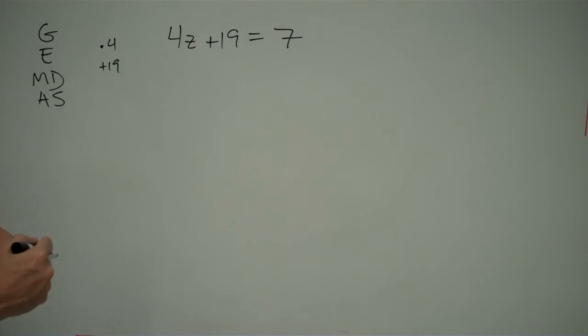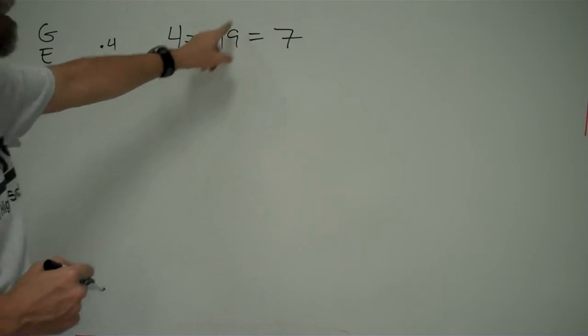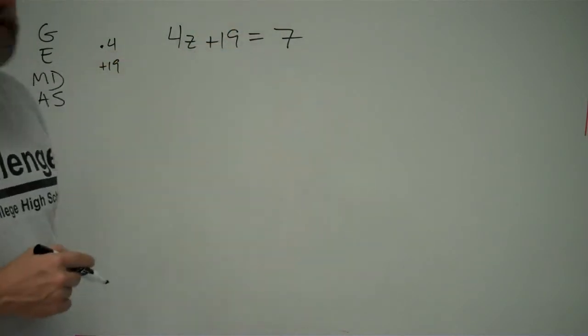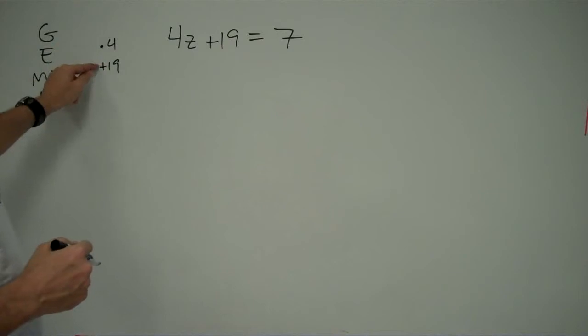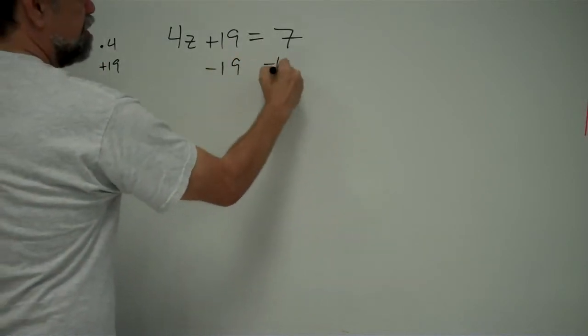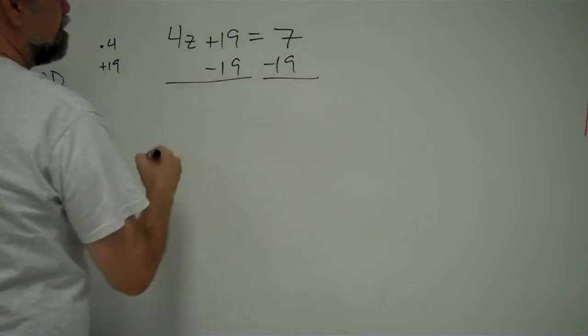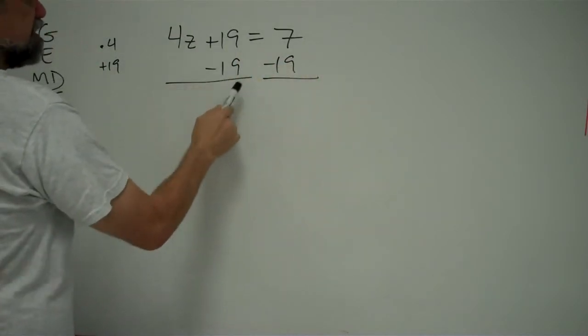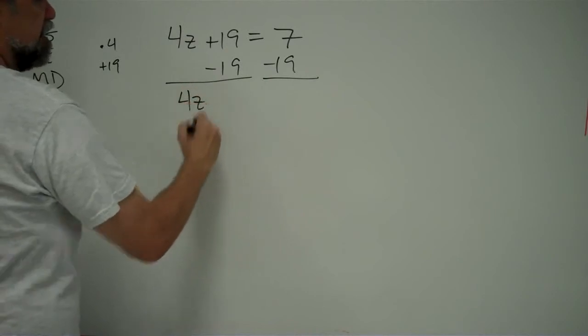So what we're going to do here is we're going to undo the plus 19 first, then we'll undo the times four. And in both cases, whatever we do to the left side of our equation, we must also do to the right side of our equation. So let's start by undoing the plus 19, by subtracting 19 from both sides of our equation.